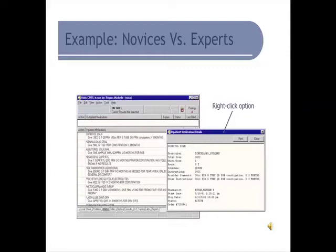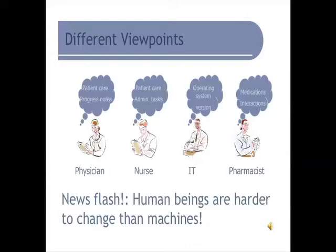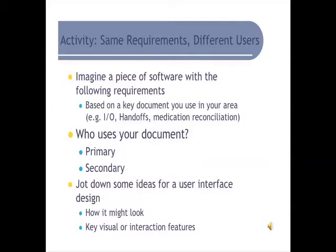As a sample example from a computer system: for experts, a right-click option gives data about a drug, whereas for a novice, they could find that same information by clicking on the active medication list. One really eye-opening point is that human beings are truly harder to change than machines. We should take advantage of the fact that we can change machines and understand that physicians, nurses, IT staff, and pharmacists are all concerned about different issues — we need to address all of them in design.